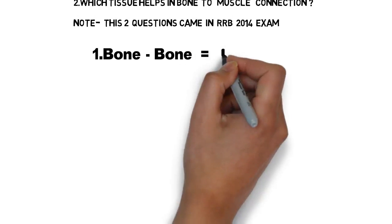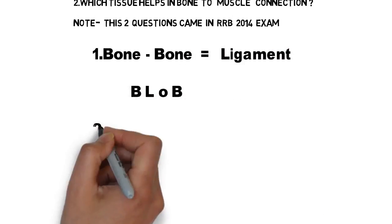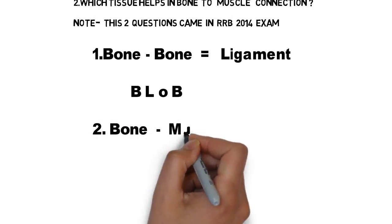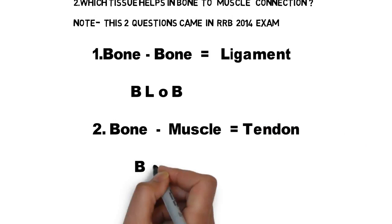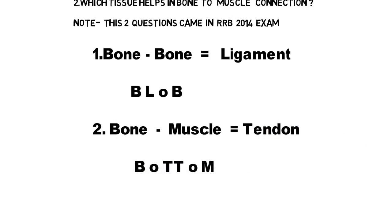Here is the trick. Ligament tissue helps in bone-to-bone connection. Concentrate on the capital letters: the starting letter of bone is B, and the starting letter of ligament is L. Since we have two bones, we have two B's and one L. Using these three letters — B, L, B — I have created an easy word: BLOB.